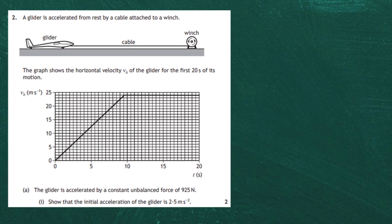Question 2 from the 2019 National Physics SQA exam, Section 2. A glider is accelerated from rest by a cable attached to a winch. The winch is a drum which the cable wraps around — it turns, draws the cable in, and in turn draws the glider across, accelerating it.